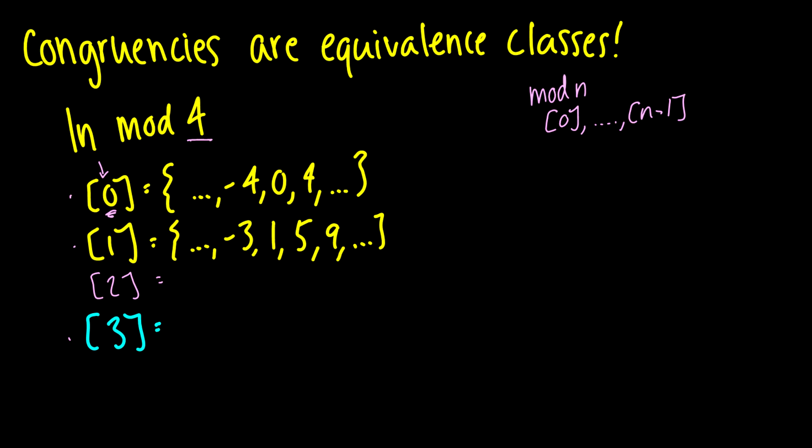So you can see here that this set 0 will contain the numbers negative 4, 0, 4, 8, 12, 16, so on and so forth. And then, with number 1, we have 1 divided by 4, that's going to have remainder 1. If we have 5 divided by 4, this is going to be 4 times 1 plus 1, which is our remainder 1 here.